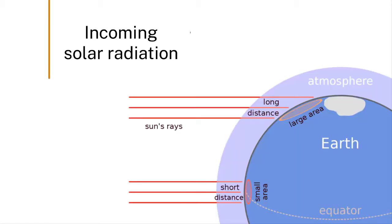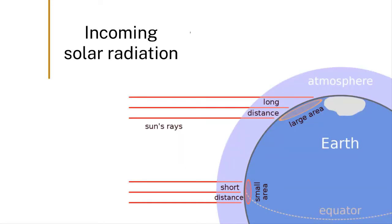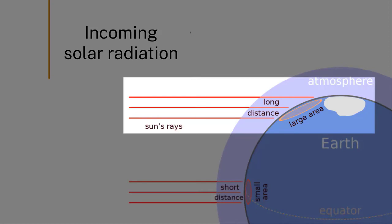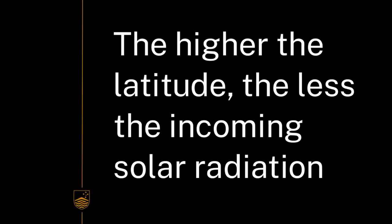This incoming solar radiation hits the equatorial regions at a normal angle so they receive the full amount head on. The polar regions however are at an oblique angle to the incoming solar radiation, so the incident radiation tends to be smeared out over a much larger area, which is dependent on the latitude — so the higher the latitude, the less incoming solar radiation.